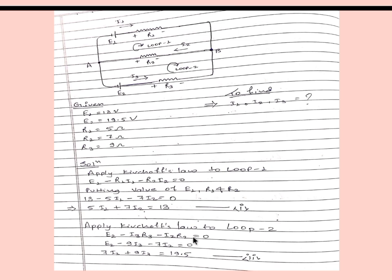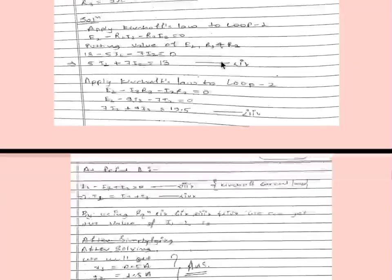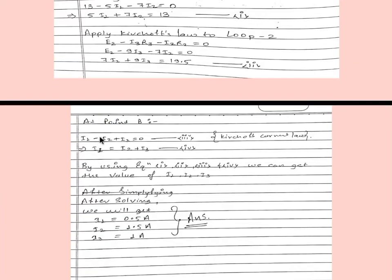After putting in the values of R3 and R2, we get equation number 2. We have three variables but only two equations, so applying Kirchhoff's Current Law at point B: I1 minus I2 plus I3 equals 0, which gives I1 equal to I2 plus I3. This is our third equation. Using equations 1, 2, and 3 together we can find the values of I1, I2, and I3.